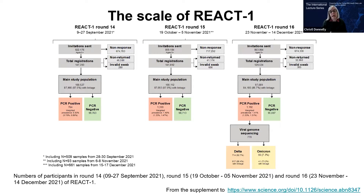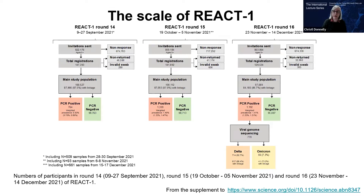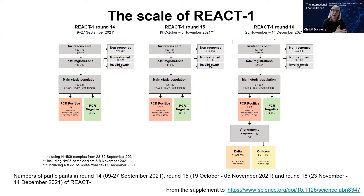In later rounds the response rate went down to about 11% in the last round. In the last two rounds we gave incentives to particular underrepresented groups. Young adults from non-white ethnicities were less likely to take part. Through Ipsos Mori, we were able to calculate a weighted prevalence that adjusted for underrepresented groups, giving people from lower-participation groups a higher weight to get as close as we could to a representative estimate.